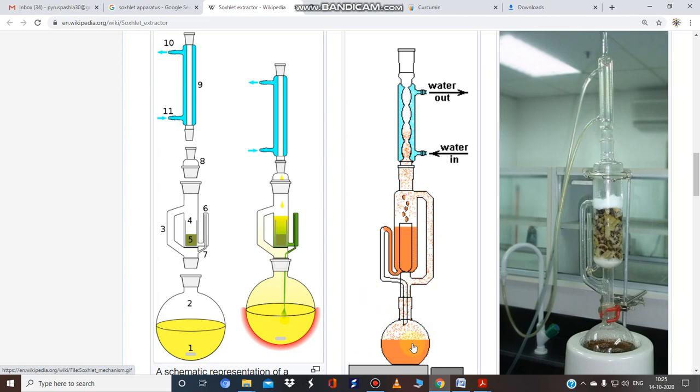The extract falls back again, that's why this method is known as continuous hot extraction. You put solvent in the round bottom flask and achieve the desired boiling point. The vapors rise through the side tube to the condenser, where they convert to liquid state.